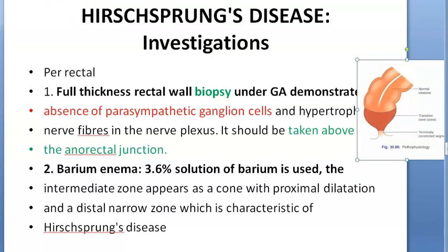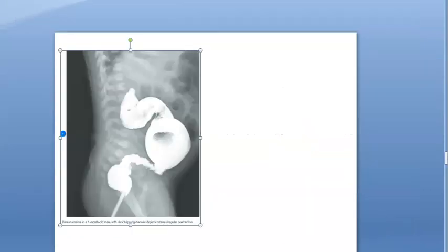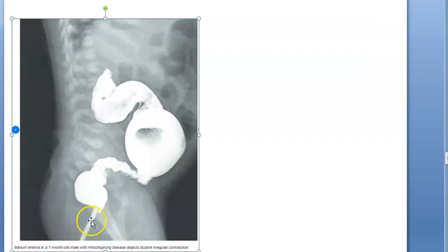Barium enema can also be used. A 3.6% solution of barium sulfate is used, and the intermediate zone appears as a cone with proximal dilatation and a distal narrow zone. This is characteristic of Hirschsprung's disease — on imaging, the colon is massively dilated proximally with distal narrowing.